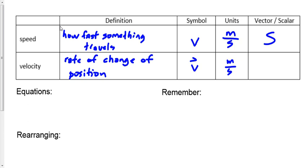Speed and velocity are almost the same thing, except that velocity involves direction and speed doesn't. When would average speed have the same value as average velocity? If you change direction, speed and velocity would be different numbers. If you don't change direction, it's the same number — just like distance and displacement are the same number if you don't change direction. Of course, velocity always has to have that direction stated.